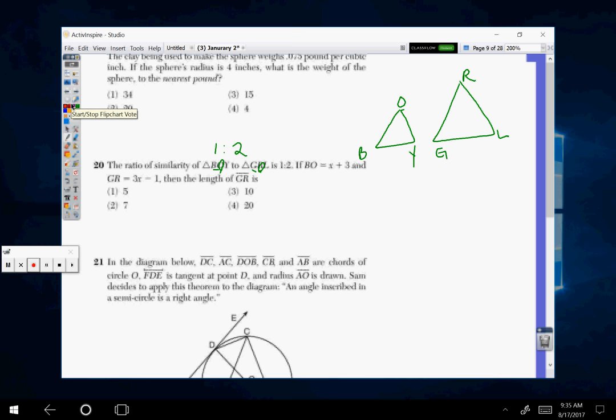It says B-O, so this side is X plus 3, and G-R is 3X minus 1. And remember this triangle here,